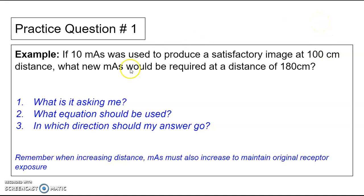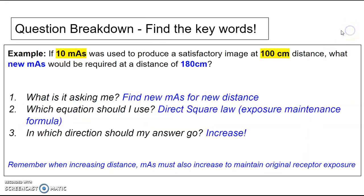So practice question, if 10 mAs was used to produce a satisfactory image at 100 centimeters distance, what new mAs would be required at a distance of 180 centimeters? Here's some questions that I want you to ask yourself. What is this question asking me? What equation should be used to figure out the results? And in which direction should my answer go? So just remember, when increasing distance, mAs must also increase to maintain the exposure.